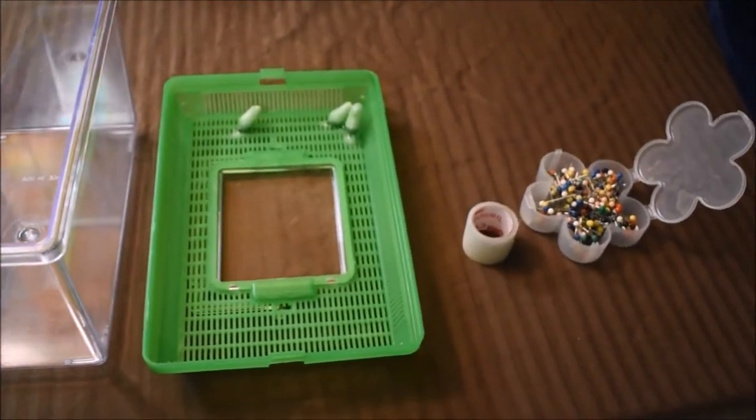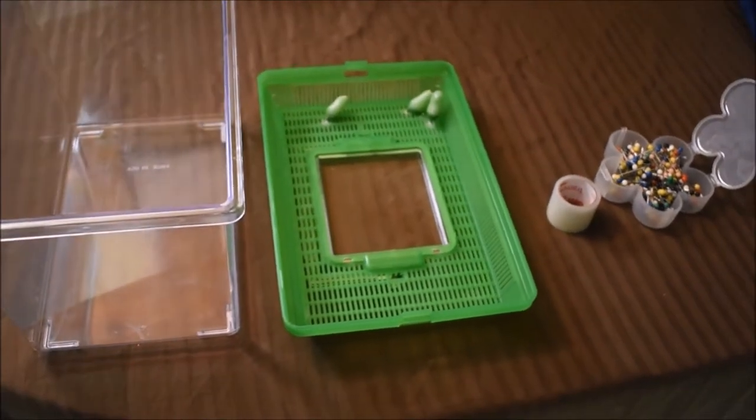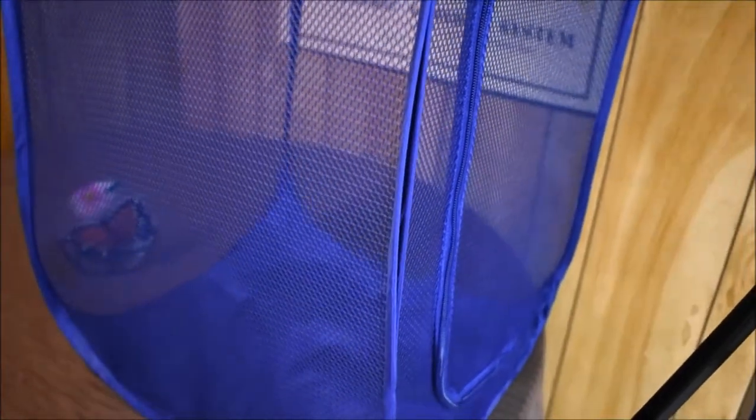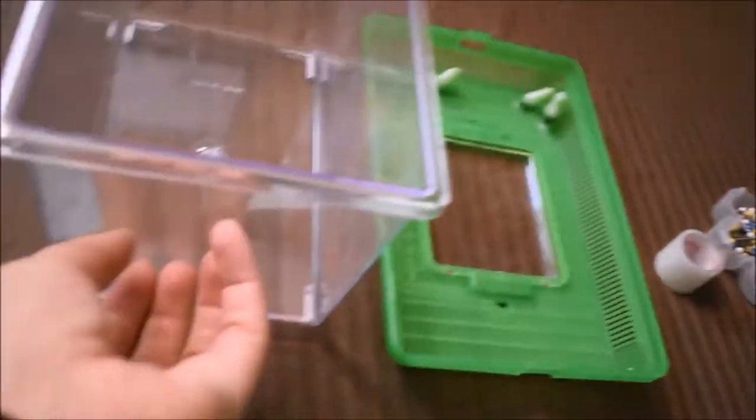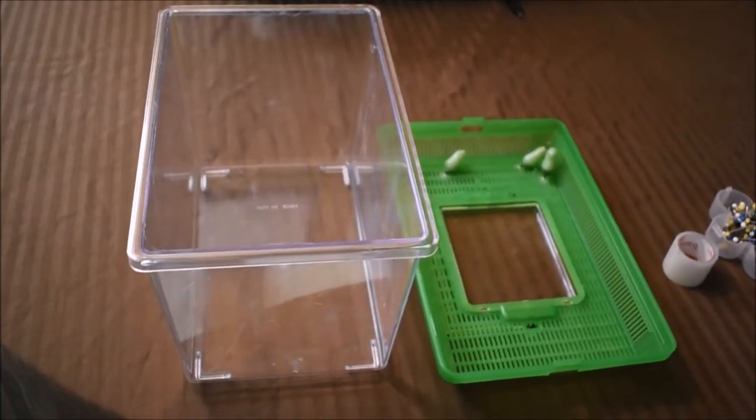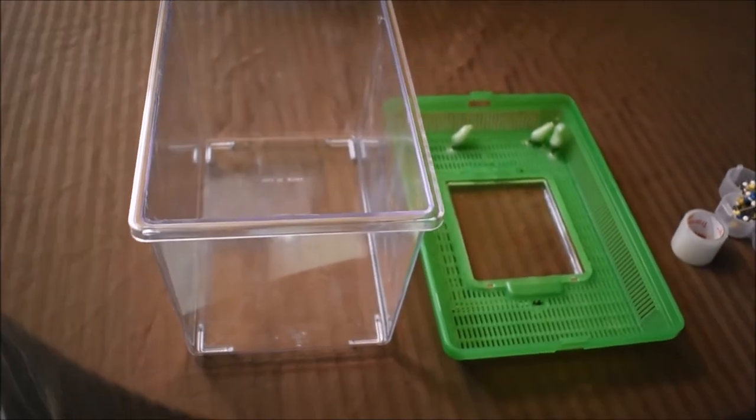When the butterflies come out, they have room to move around more. They also have the mesh to climb up on when they eclose, because the containers make me nervous. They're very slippery on the sides unless you have a stick in your container. If that monarch falls with wet wings, it's kind of doomed, so I always play it safe.